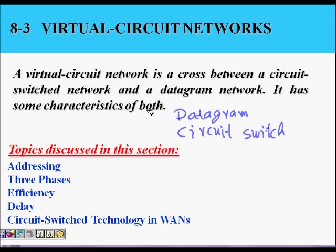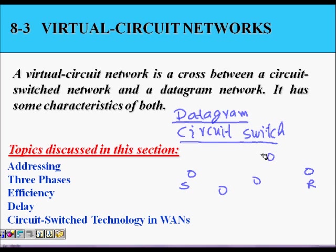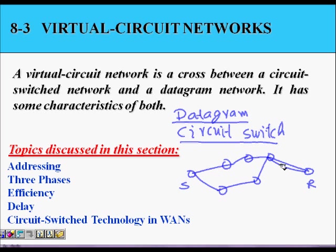In this lecture we are going to learn about virtual circuit networks. We have already studied datagram networks and circuit switched networks. In a datagram network, if there is a sender and a receiver, the packets or datagrams being sent are all independent of each other, which means they can take different paths. Packet one might take one path, packet two might take another path, so delays can be different, they can be out of order, and you have no guarantee of service.